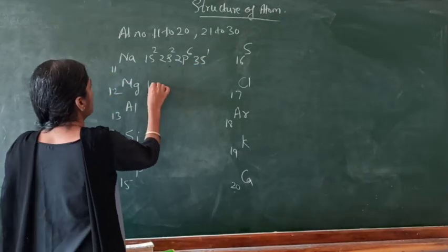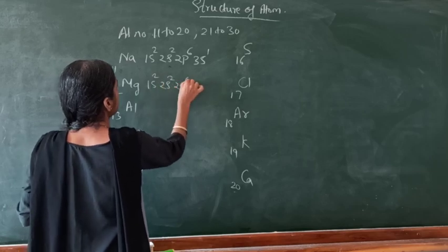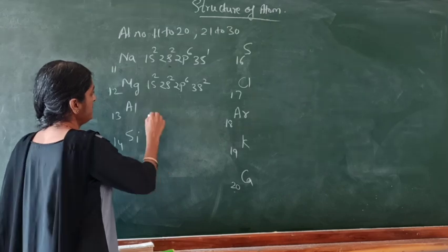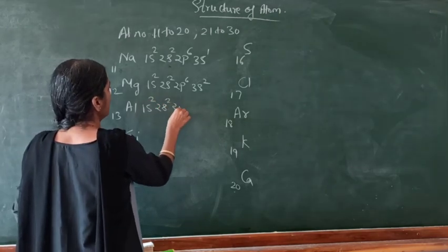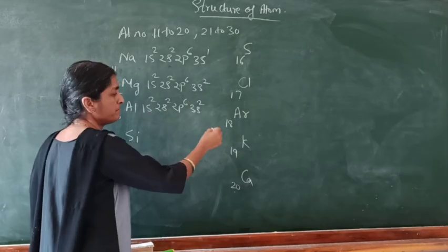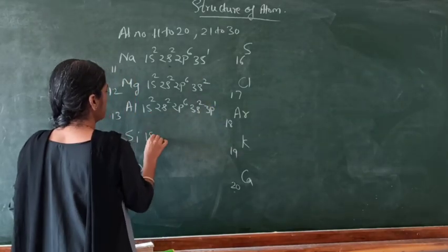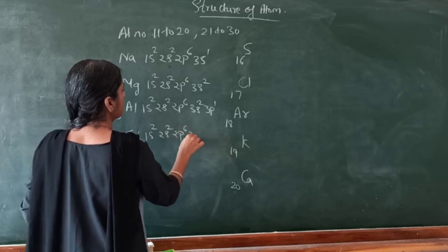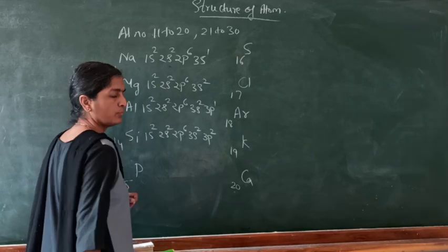Next, magnesium: 1s², 2s², 2p⁶, 3s². Next, aluminium — atomic number 13: 1s², 2s², 2p⁶, 3s². Next is 3p, so 3p¹. Next, silicon — atomic number 14: 1s², 2s², 2p⁶, 3s², 3p².